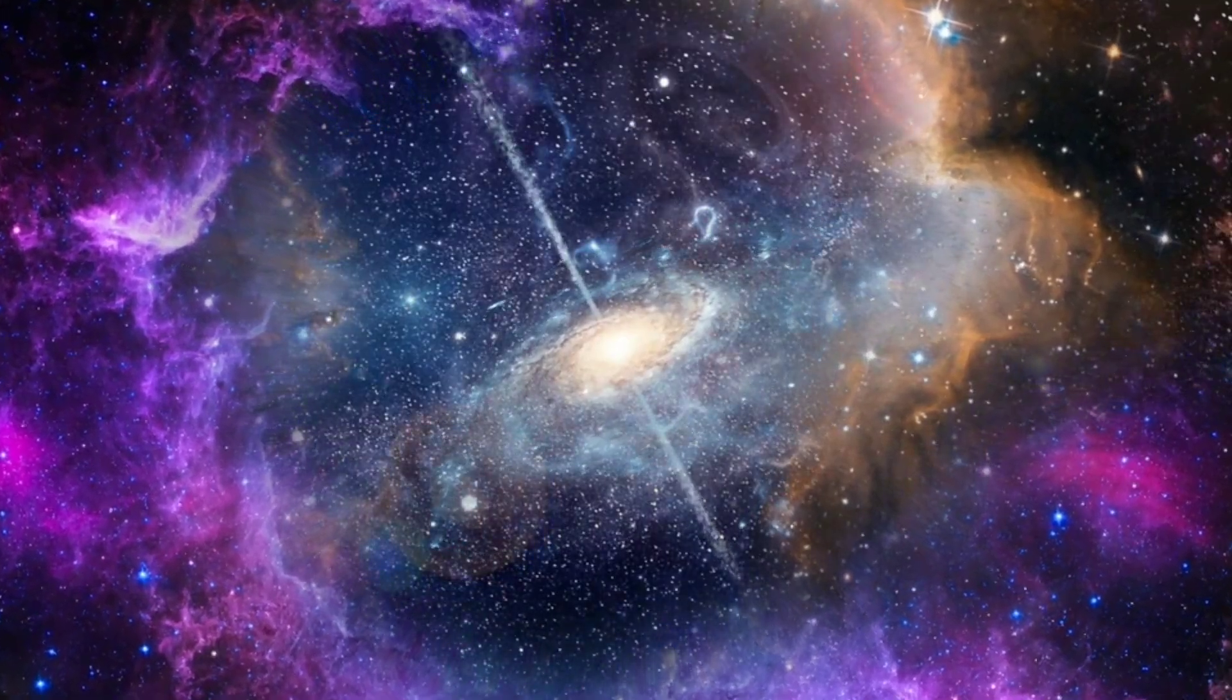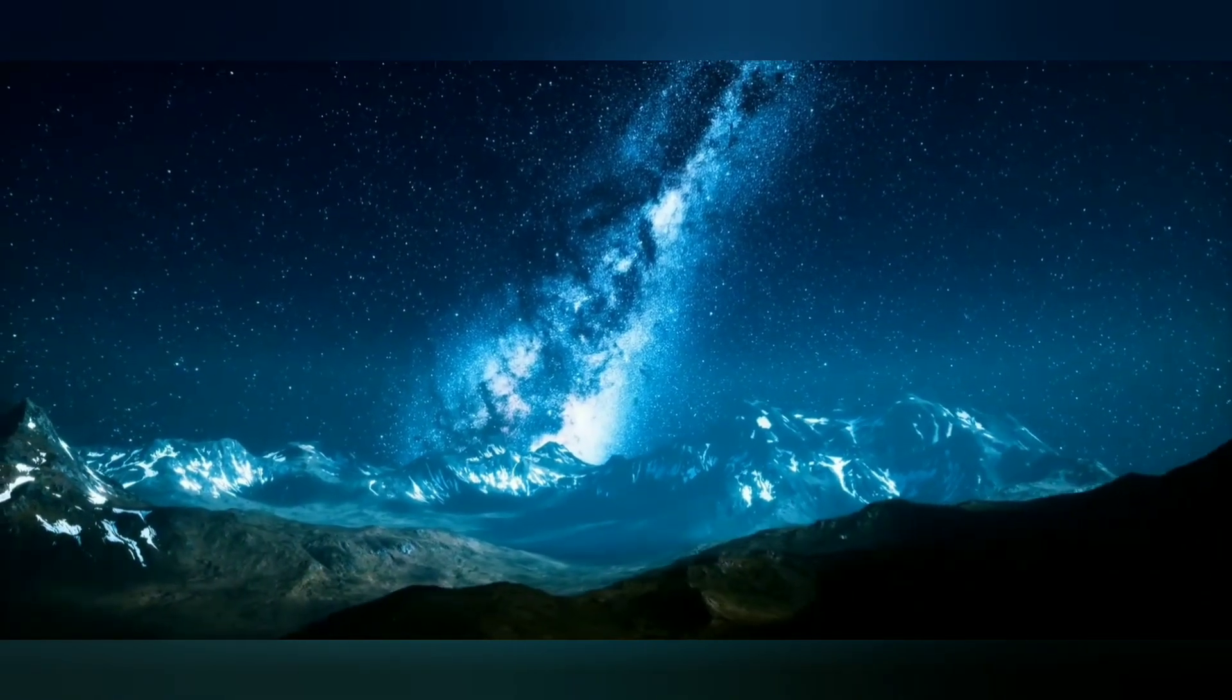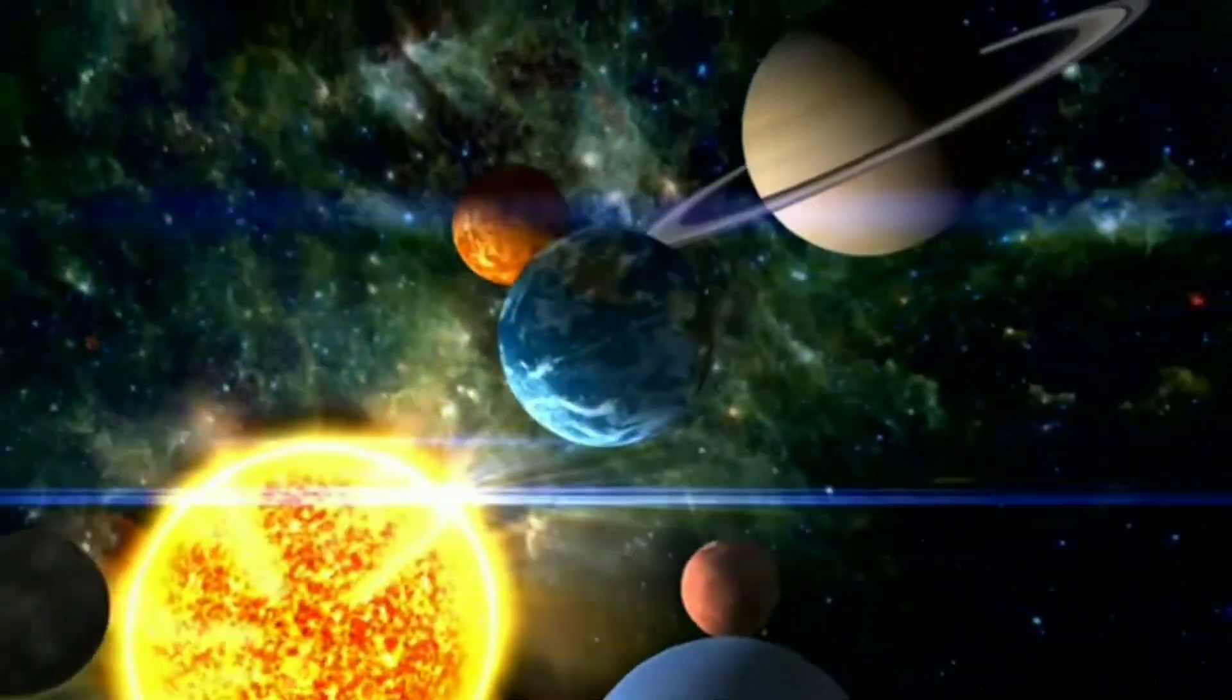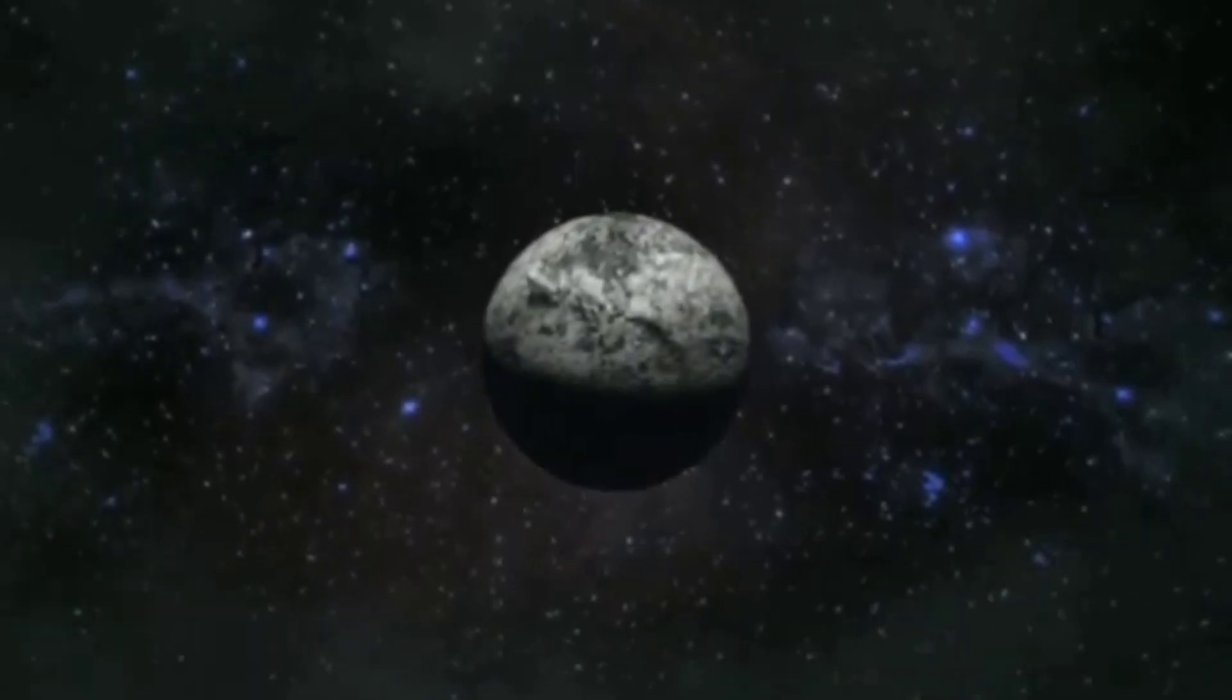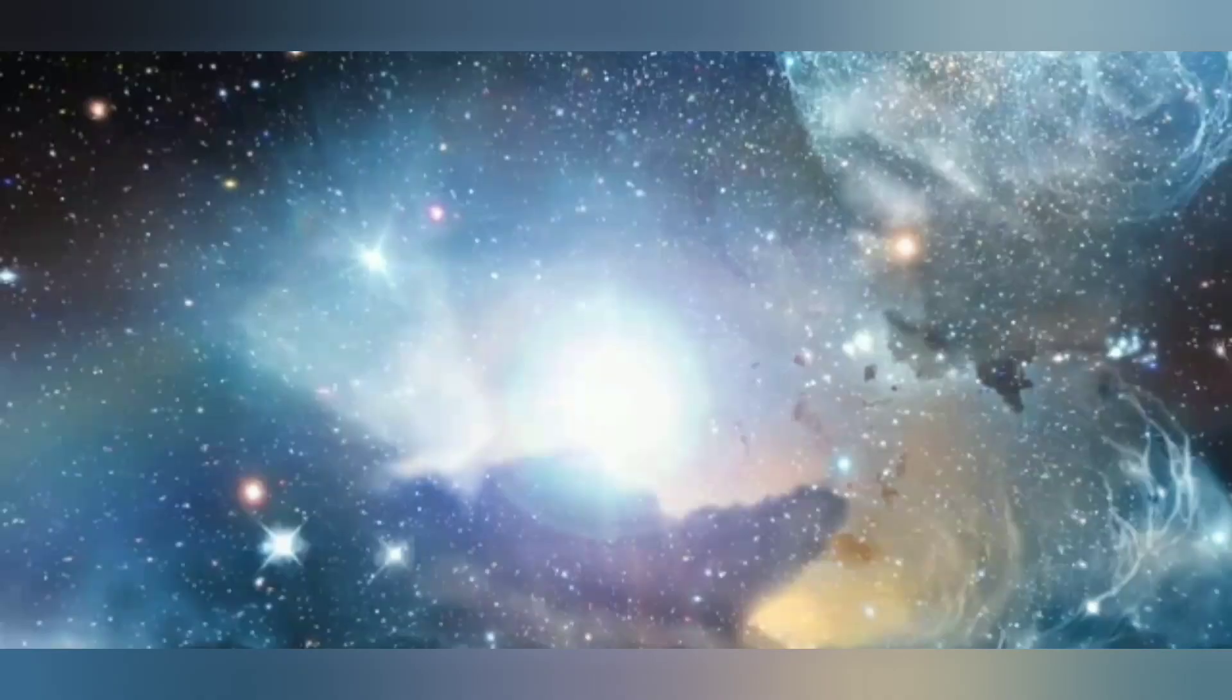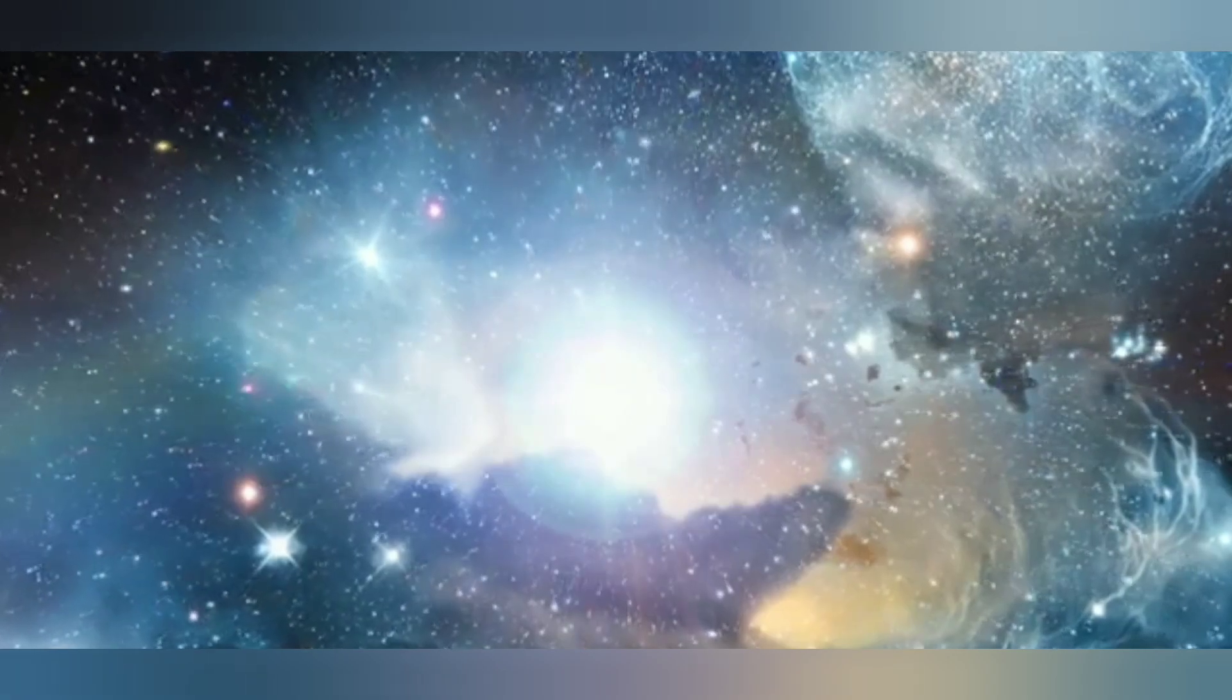Our galaxy, the Milky Way, has hundreds of billions of stars. Many of these stars have planets orbiting them. Some of these planets might be like Earth, with the right conditions for life. So if there are so many chances for life to exist, why have we not found any aliens yet?